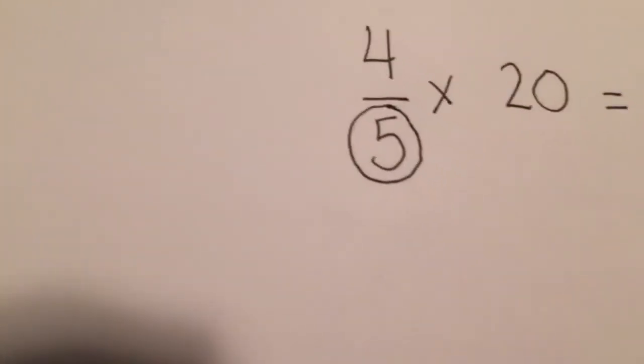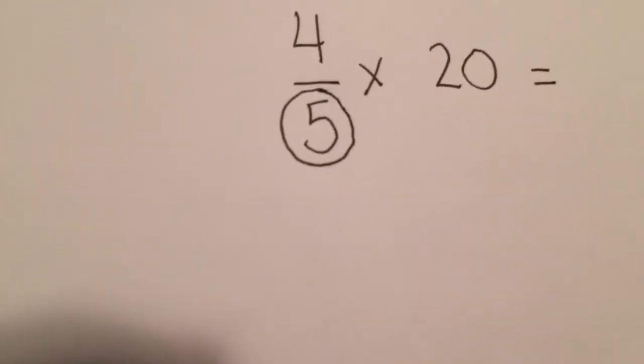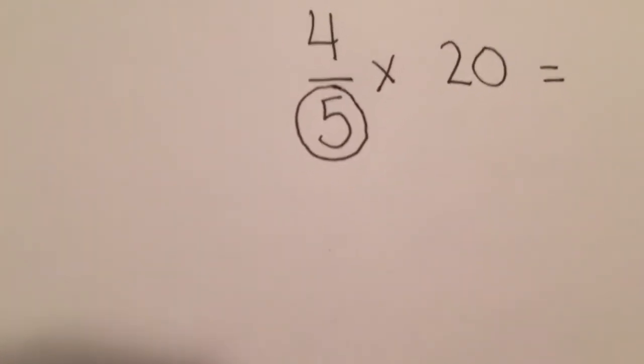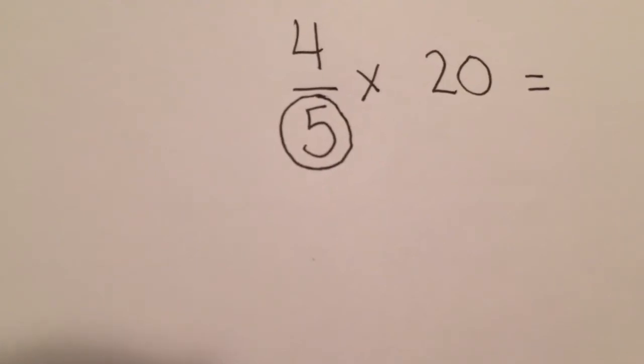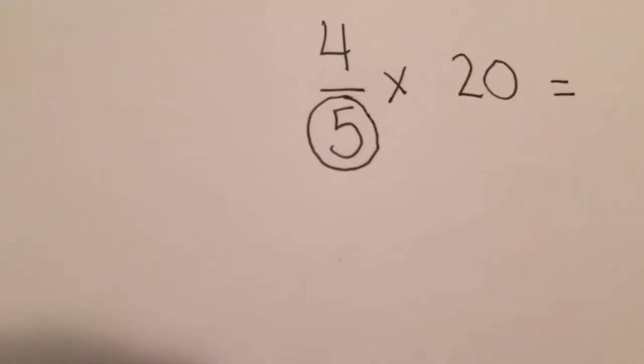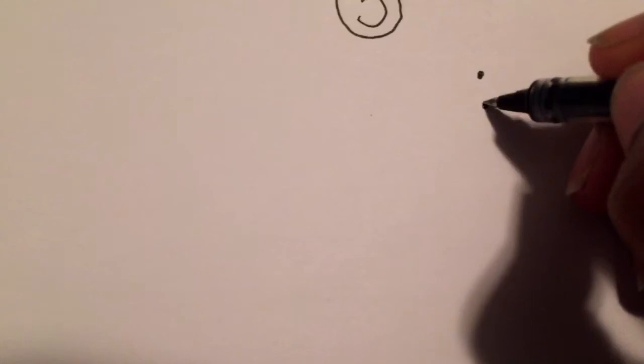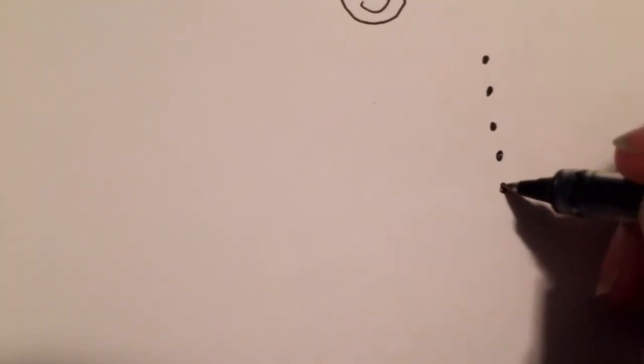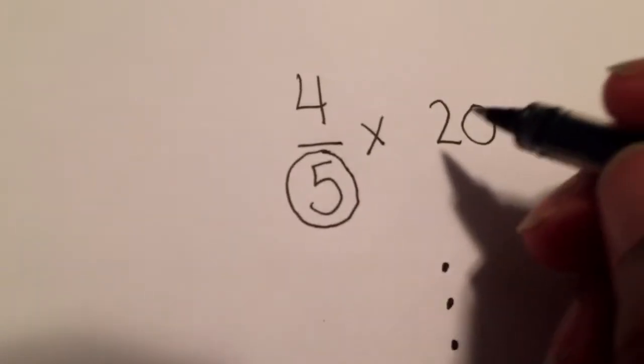The denominator tells me how many numbers I will have in my column. So that says five, so that's also the number of groups that I'm going to be making: one, two, three, four, five.